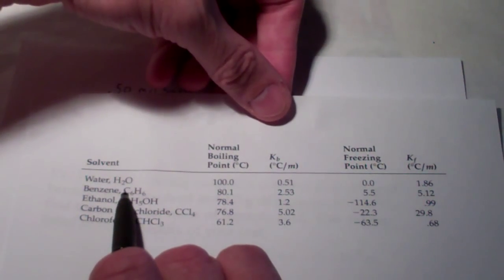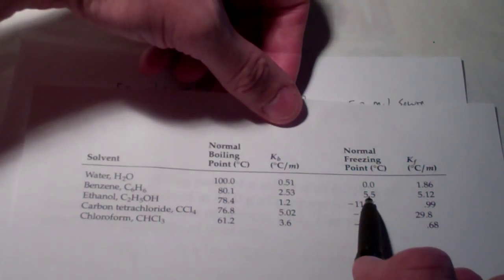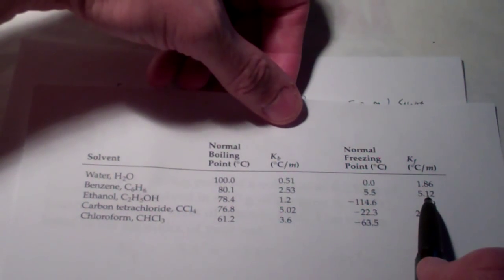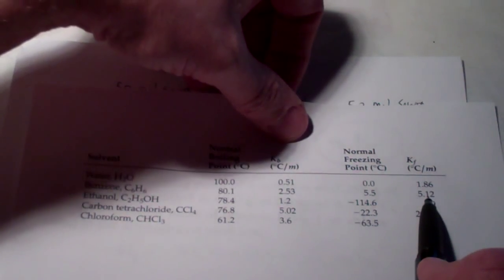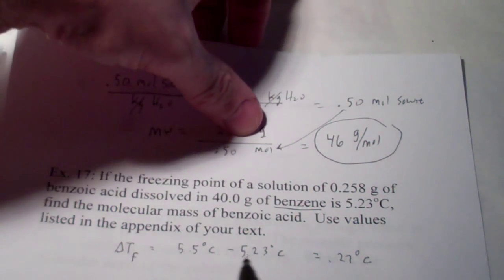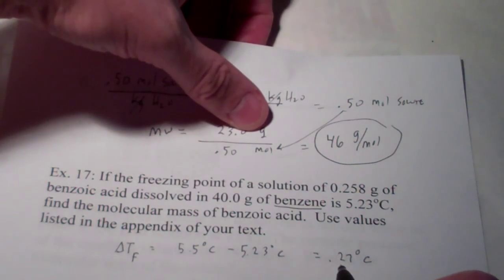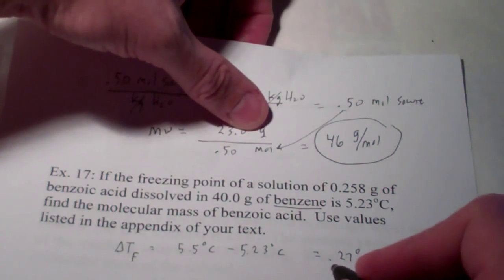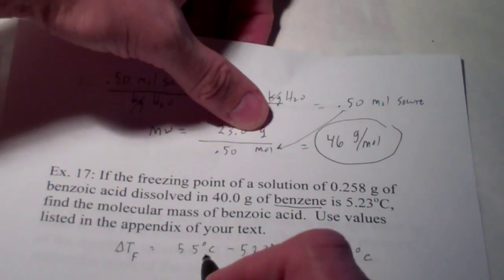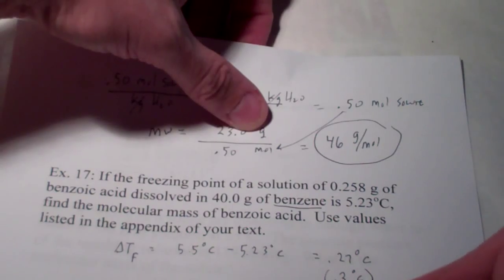So benzene, the normal freezing point we can see is 5.5 degrees. And the freezing point constant is 5.12 degrees Celsius per molal solution. So if the normal freezing point is 5.5 and the freezing point of my solution is 5.23, that's a depression of 0.27 degrees. And I suppose, significant figure wise, we're only allowed to go to the nearest tenth. We should probably call that 0.3 degrees Celsius.